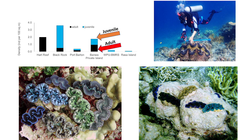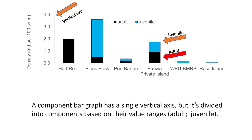The component bar graph that we have here shows the density of giant clams, where the clams are categorized as either juveniles or adults. A component bar graph has a single vertical axis, but is divided into components based on their value ranges. In this case, we have the adults and the juveniles.